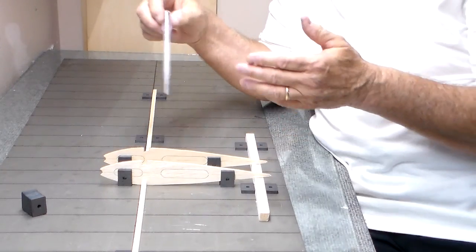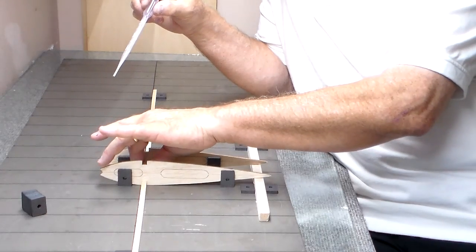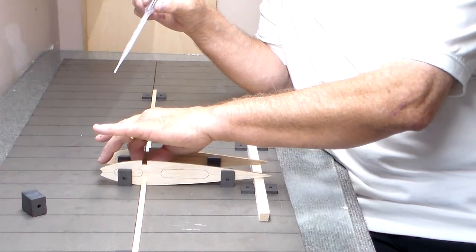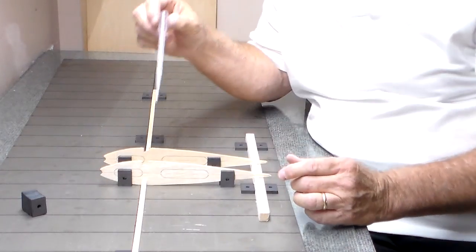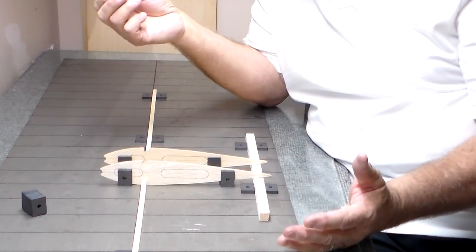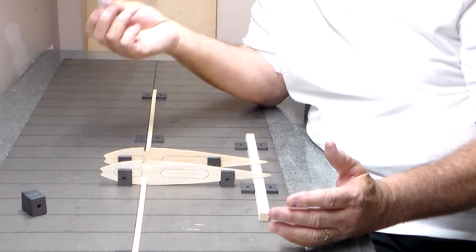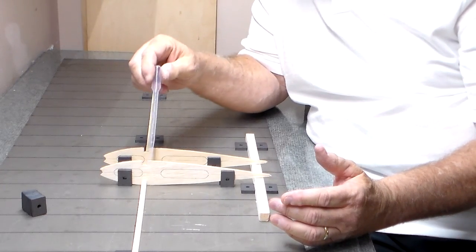You don't want it running down and getting the spar glued to the metal. You can scrape it off but that's just a mess you don't want to do. If you do it carefully enough, I'll tell you what, as you go along you don't even have to use this. You can actually put Elmer's on there, just a little dab of Elmer's.